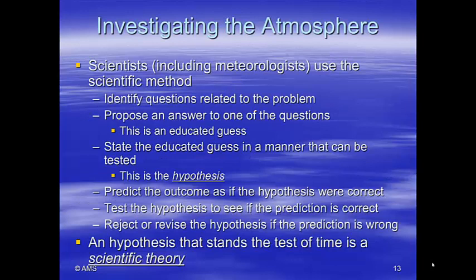We can't have a science course without talking about the scientific method. We identify questions related to a problem or process, then propose an answer — an educated guess. Once we state the educated guess in a manner that can be tested, this is called a hypothesis. We predict the outcome as if the hypothesis were correct, and we test it. If it's correct, we keep testing. If it's wrong, we revise the hypothesis, or throw it out entirely. If it keeps coming up correct through repeated testing, it becomes a scientific theory.